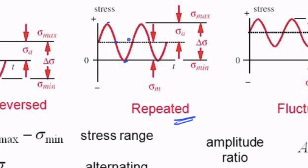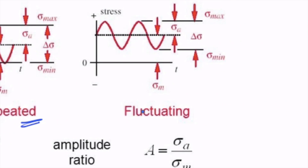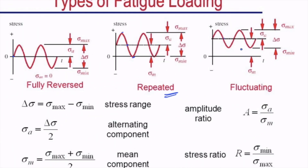The third kind of loading is what we call fluctuating loading. The difference between repeated loading and fluctuating loading is that in fluctuating loading, the load never reaches zero — it will not touch the x-axis. It has a stress value at the beginning, increases, reaches a maximum, then comes back to a minimum. The stress curve fluctuates in the positive direction, there is no compression, and the stress cycle never reaches zero.